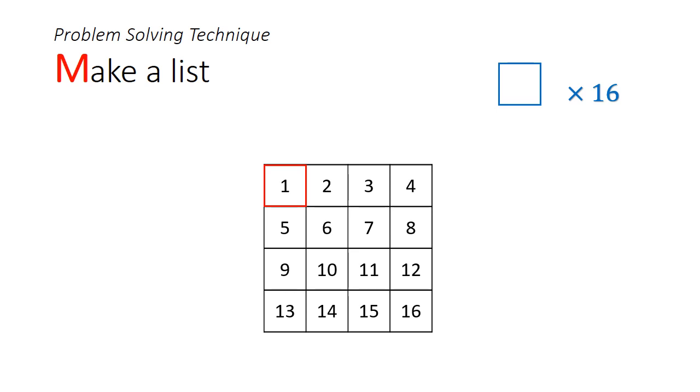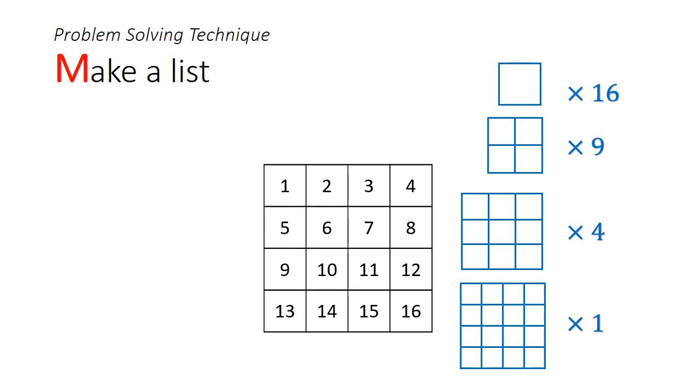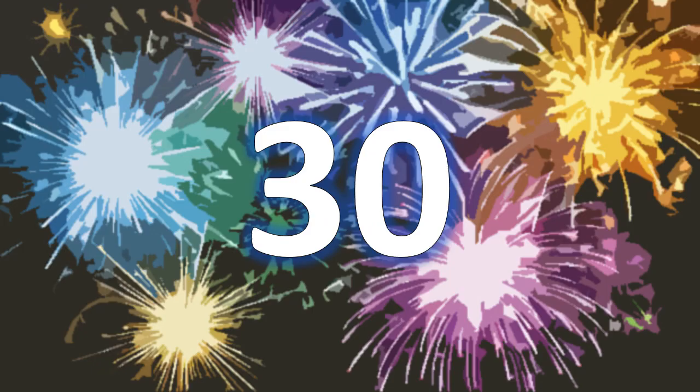If we just look at the 1x1 squares, there is a total of 16 of them. If we count the 2x2 squares, there are 9 of them. The 3x3 squares, there are 4, and there's just 1 large 4x4 square. All in all, the total number of squares comes up to 1 plus 4 plus 9 plus 16, which is the sum of squares from 1 to 4. This gives us 30. So, did you get the answer?